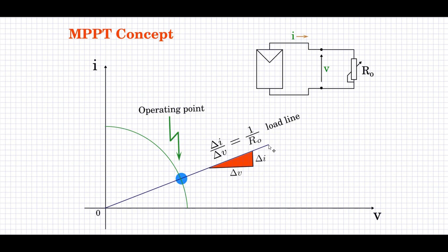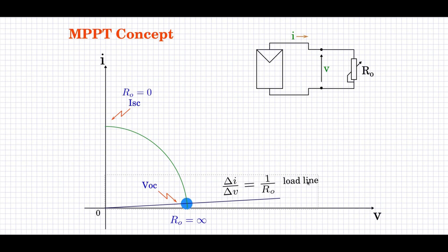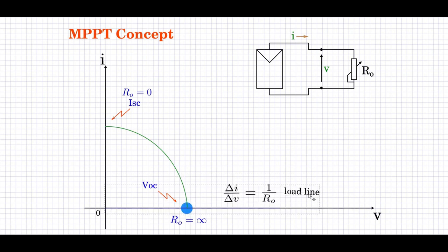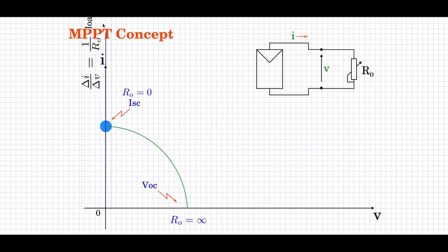We have discussed this load line in week 2. The load line is nothing but the ratio of delta I by delta V, which is 1 by R0. If we move this load line along such that it is along the X axis, then 1 by R0 — the slope of that line — is 0. Therefore R0 has to be infinity, which means this is open circuit across the terminals. Similarly, if we rotate the load line such that the slope is infinite and aligned along the Y axis, then the operating point represents R0 as a short circuit — R0 is equal to 0.